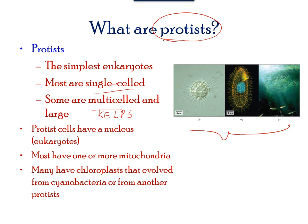Many protists live in a symbiotic relationship with other organisms, or they may exist as parasites. Since they are eukaryotes, they have a nucleus, a mitochondria, and a chloroplast.